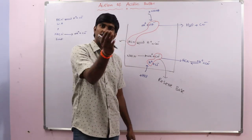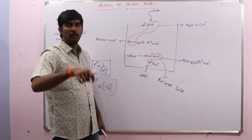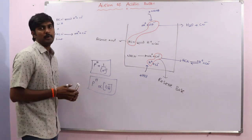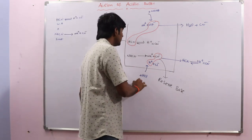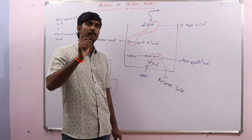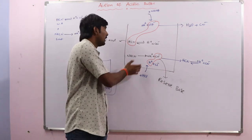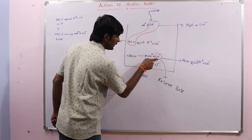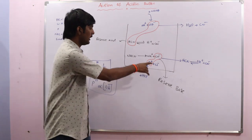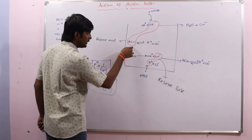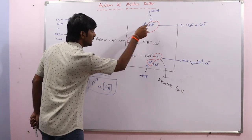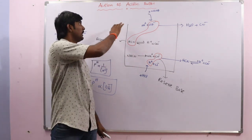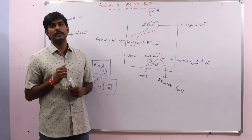Most of the added OH⁻ ions are reacted, so very few remain, resulting in a very slight and negligible increase in pH. An acidic buffer resists the change in its pH when a strong acid or strong base is added. The anion neutralizing added H⁺ ions is the reserve base; the unionized acid neutralizing added OH⁻ ions is the reserve acid. In the next lecture, we will discuss the action of a basic buffer.